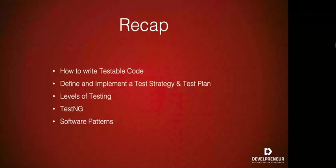Up until now, we've had a long process of talking about the whole software test lifecycle and the full overview of applying testing at every single stage of your development process. We looked at how to write testable code, the different types of requirement documents you can build at the beginning like your test strategy and test plan, and from those we built our test cases. We also looked at the different levels of testing: unit testing, acceptance testing, system testing, and now regression testing.